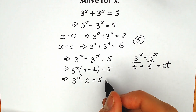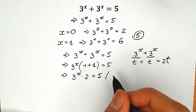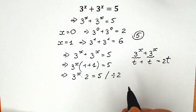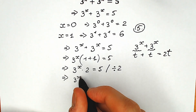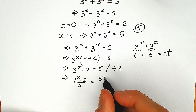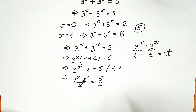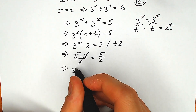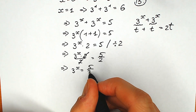Right now, let's divide both sides by 2. We have 3 to the x times 2, and we divide by 2. Our right side equals 5 divided by 2. We can easily cancel, and as a result, we have 3 to the x equal to 5 over 2.